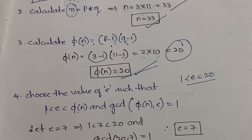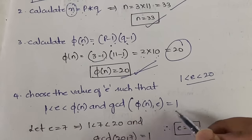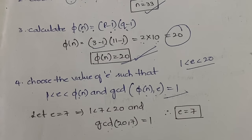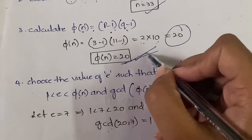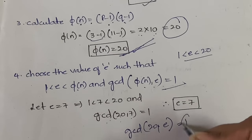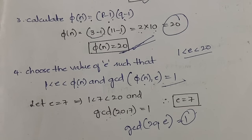Also, the GCD of φ(n) and e must equal 1. So whatever value of e you select, GCD(20, e) must be 1. For example, you cannot choose 2 because GCD(20, 2) is not 1. But 3 and 20 have GCD of 1, so you can take 3. You cannot take 4 or 5, but you can take 6 or 7. Here we have taken e = 7. You can take any valid value; it doesn't have to be 7.